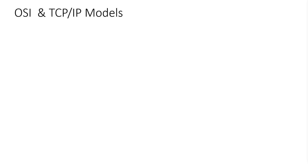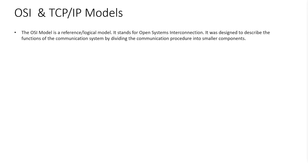Hello, welcome to this first topic on Network Basics. We will talk about the two models that describe the communication procedure on IT systems. The first one is the OSI model. This model is a logical model. It stands for Open System Interconnection. It was designed to describe the function of the communication system by dividing the communication procedure into smaller components.